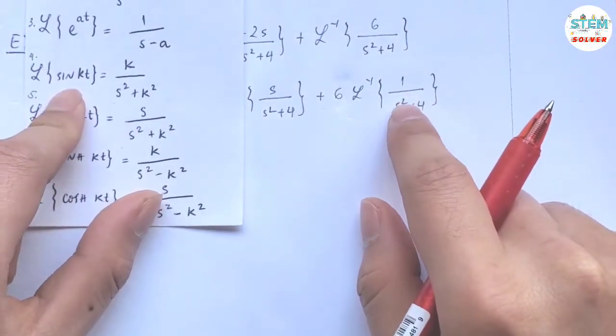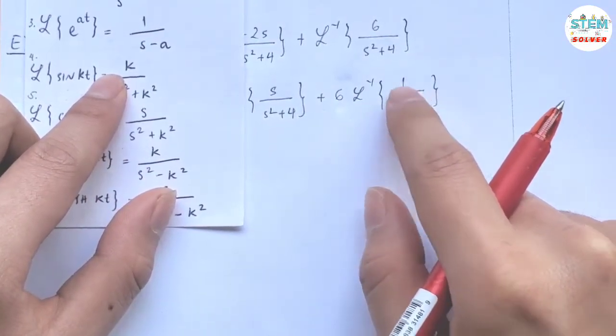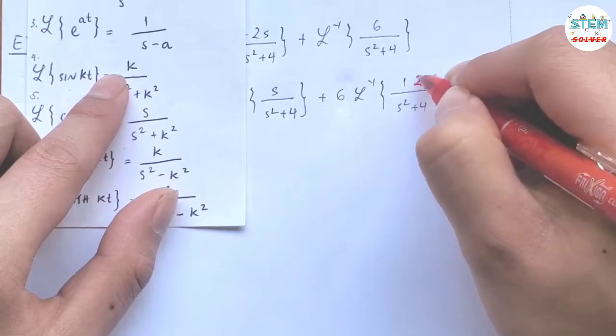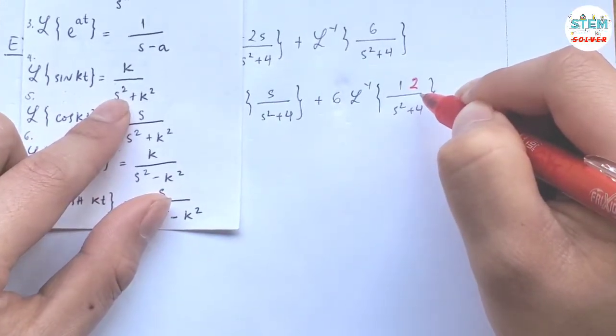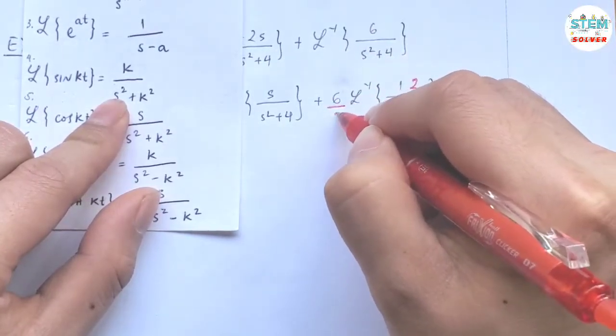But one thing that is different is that we need to have a k on top. And this k is 2. So on top, we need to have 2 to match this form. Initially, we don't have 2. So when I put a 2 on top, I have to divide by 2 to compensate.